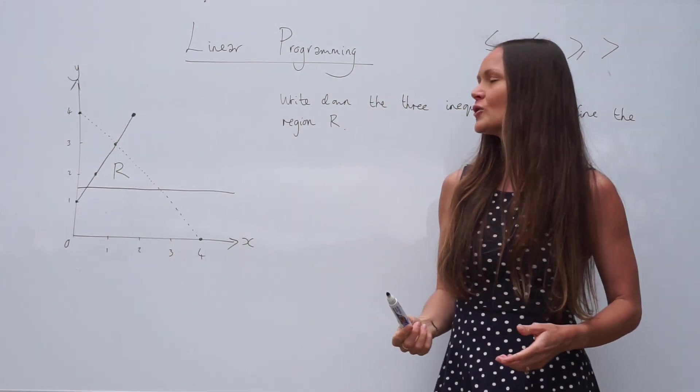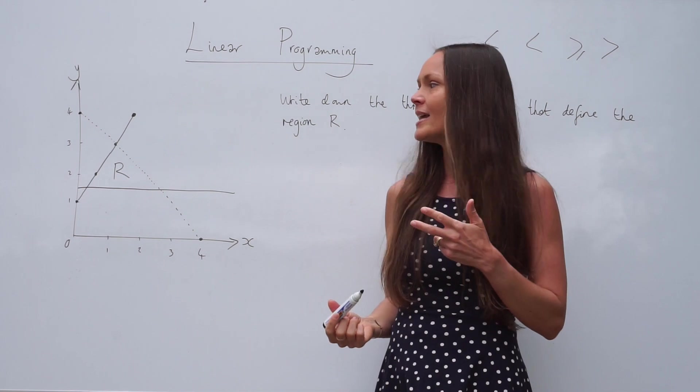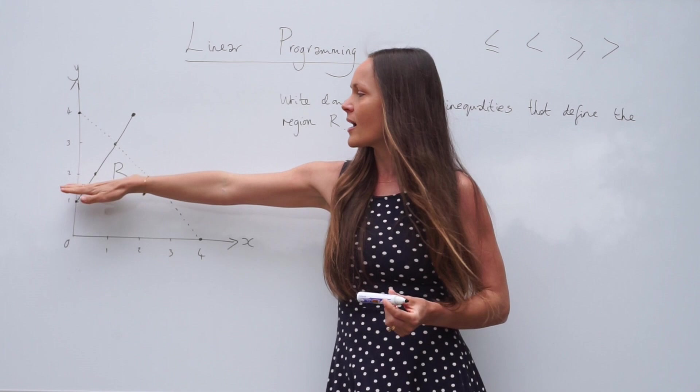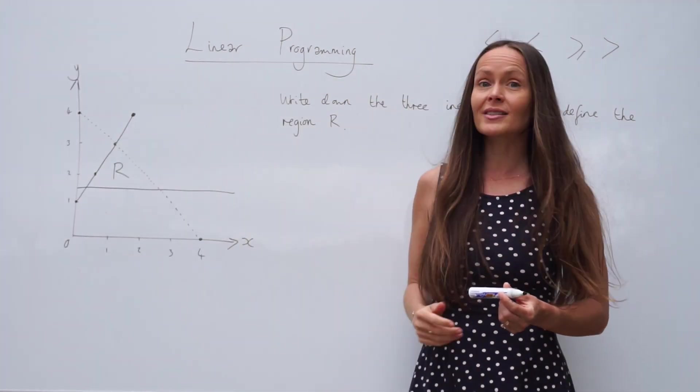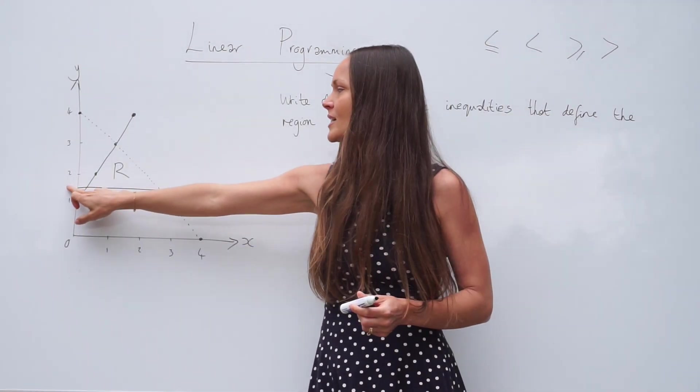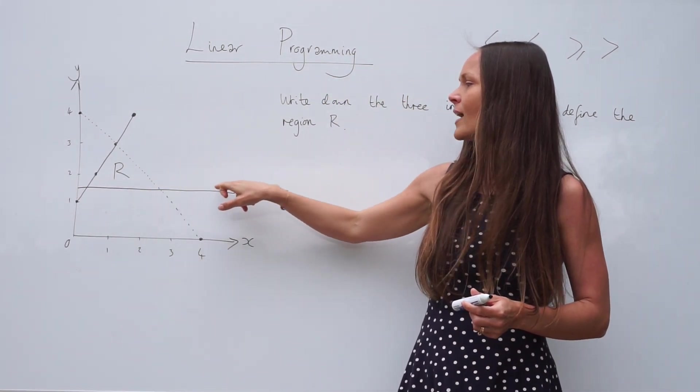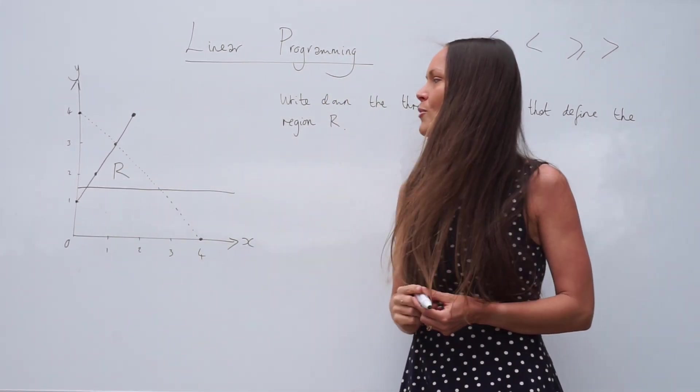So the first thing you should do is write down the three equations of those straight lines. So let's start by looking at this horizontal line. This line crosses the y axis at positive 1.5. And all the way along this line, the y value is always equal to 1.5.